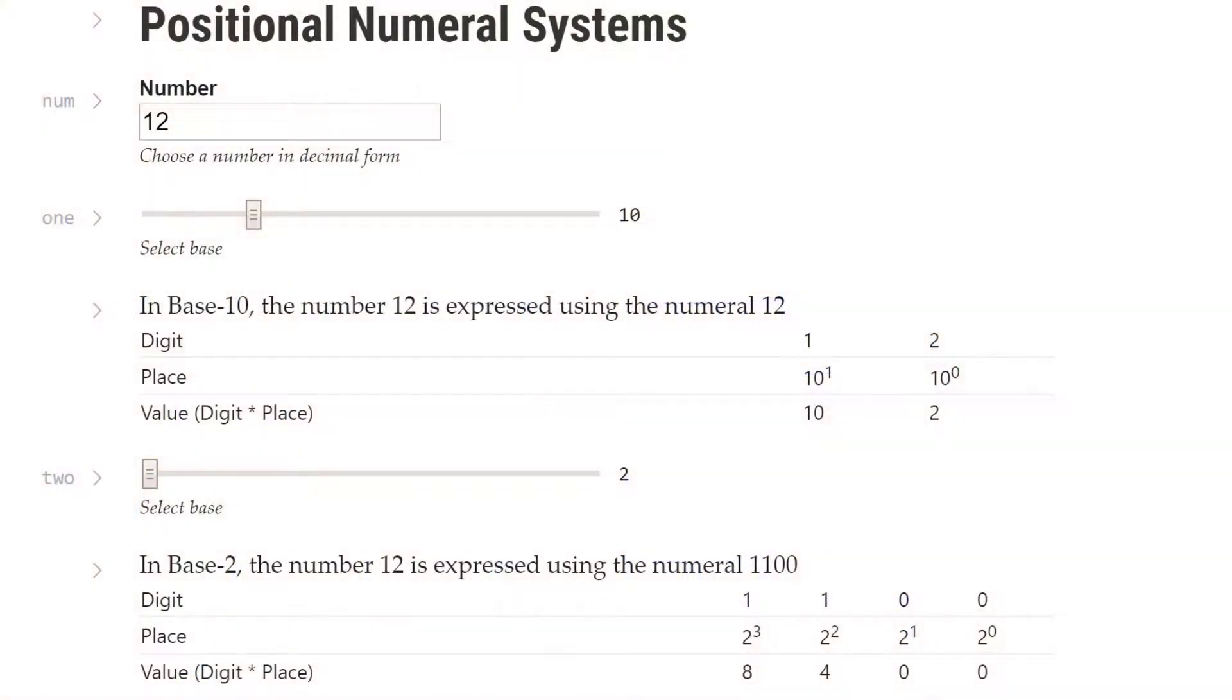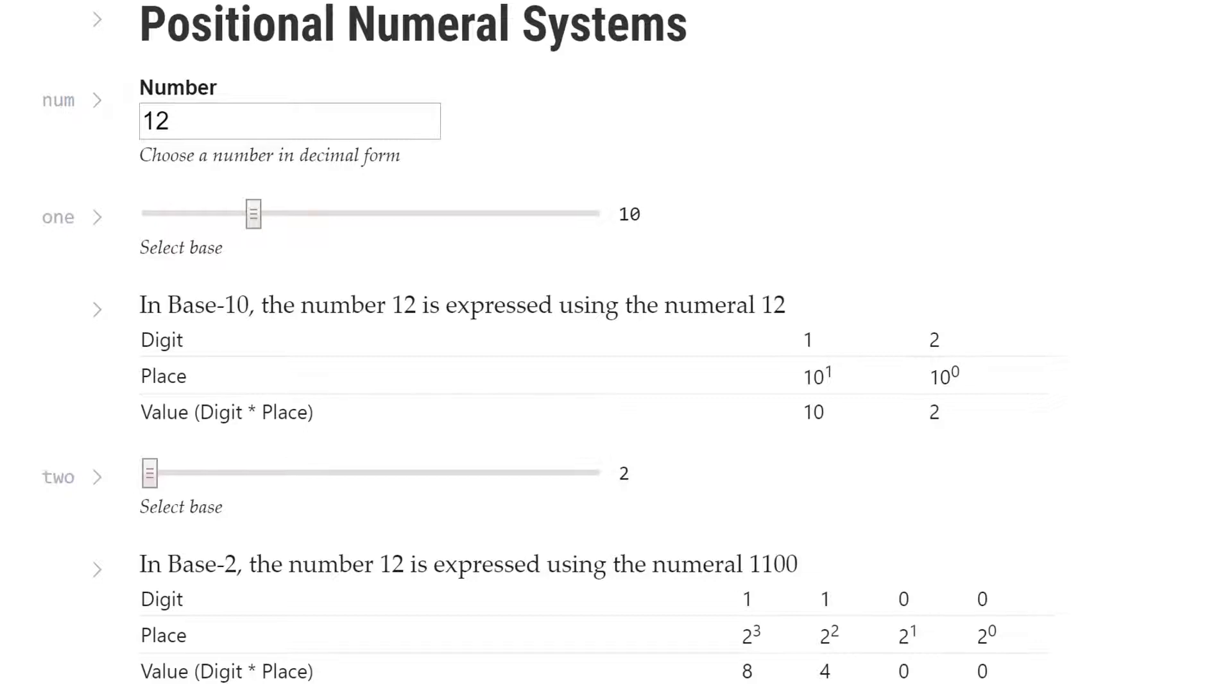The groups we count here are determined by the base, and we call them places. In base 10, we have the ones place, the tens place, and the hundreds place. The places go up by powers of 10. But in base 2, we have the ones place, the twos place, the fours place, the eights place, the sixteens place, and so on. The powers are powers of 2.